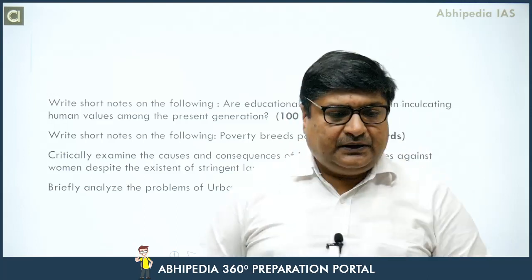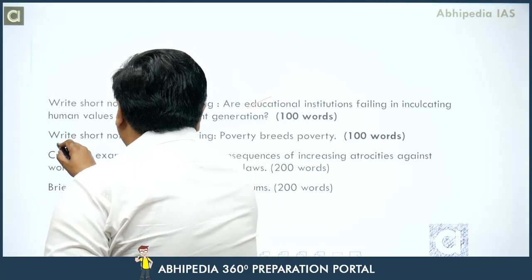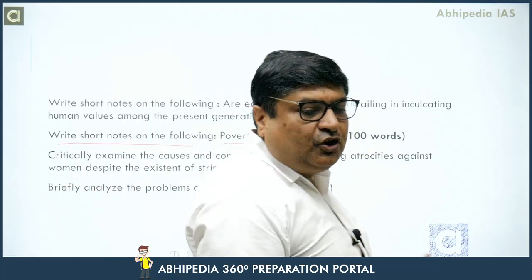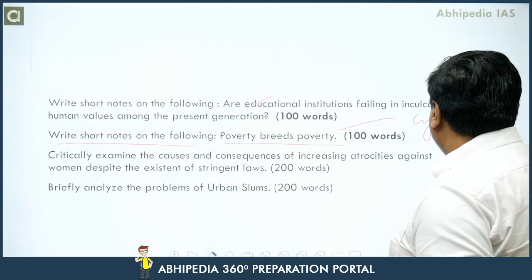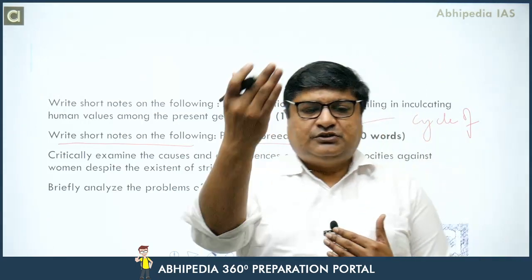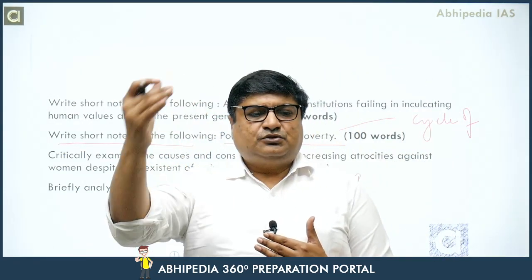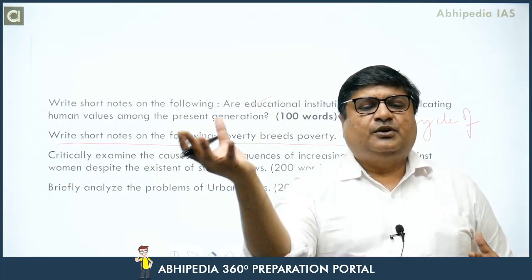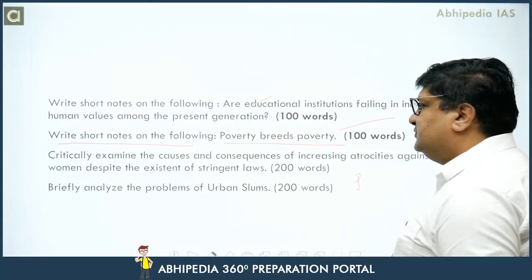Next: write a short note on 'poverty breeds poverty' — this is the cycle of poverty. How does poverty perpetuate itself? Those in poverty lack access to education, which then keeps them in poverty. It is a very simple question, not even worth extensive discussion.